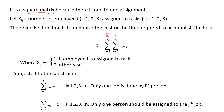Where xij equals 1 if employee i is assigned to task j, and 0 otherwise — it can only be 1 or 0. This is because it is only possible for an employee to be assigned to a single task, or a single task to be assigned to only a single employee. This is subjected to the following constraints.